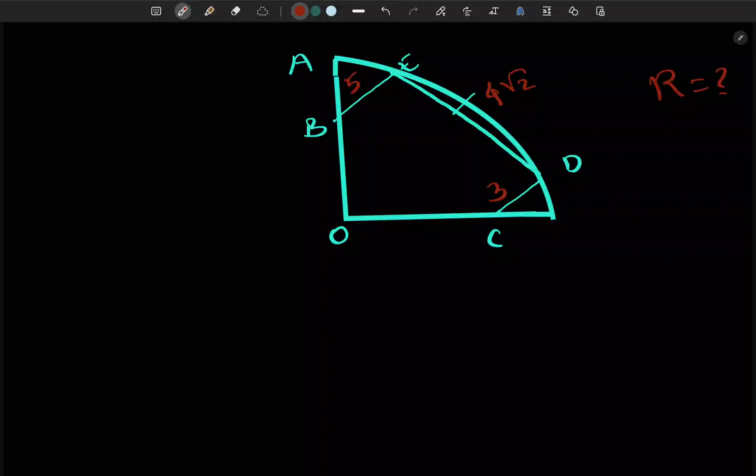So let's see a new question on geometry today. We have been given a quarter circle. In this circle we have been given a few measurements: CD is given here as 3, B as 5, one of the slant lines here is 4√2, and we have to find out the radius. Let us start this question and approach how to find R.